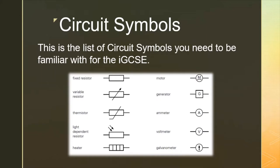The heater at the bottom doesn't really need a huge amount of explanation — it's quite straightforward; it gets hot when a current passes through it. Moving on to the right-hand side, the top one is a motor, and the second one down is a generator. In the past we would have talked about a dynamo — something that turns kinetic energy into a DC current. A generator is something that turns kinetic energy into an AC electrical supply.